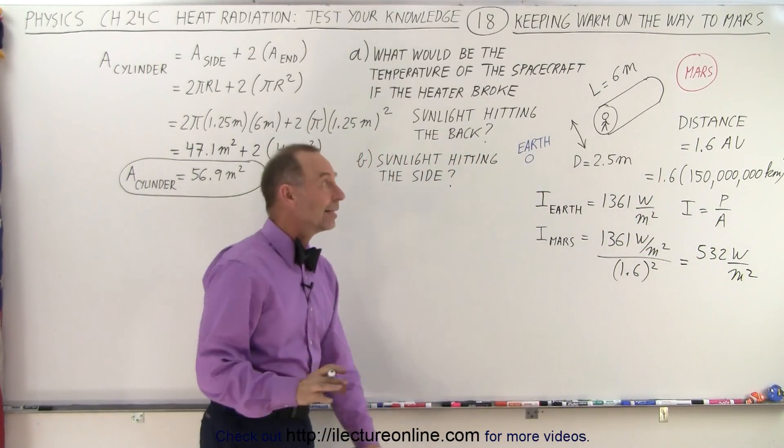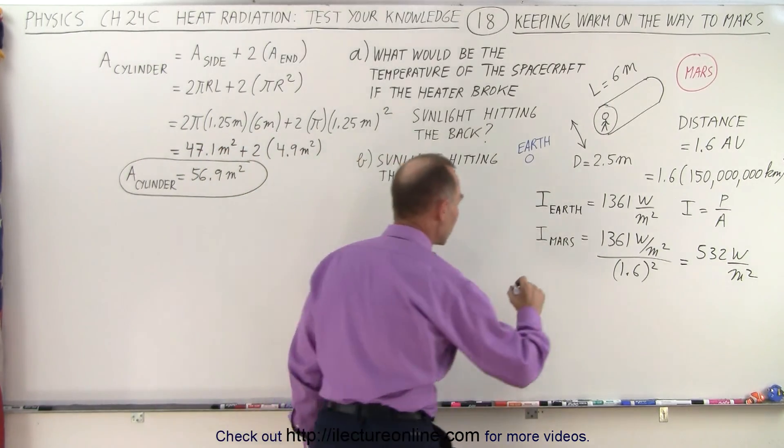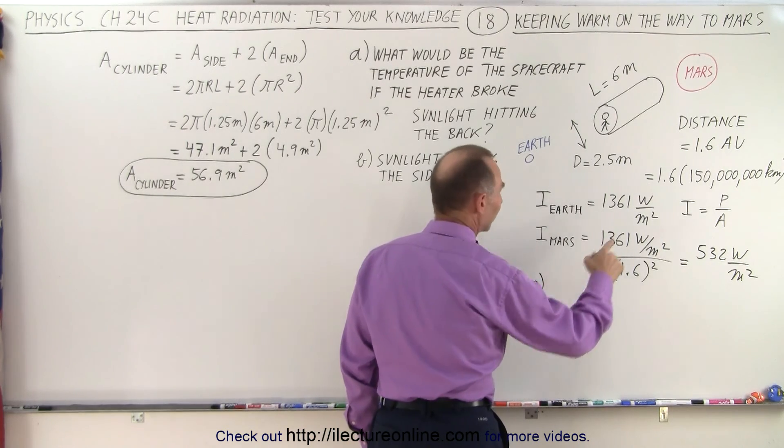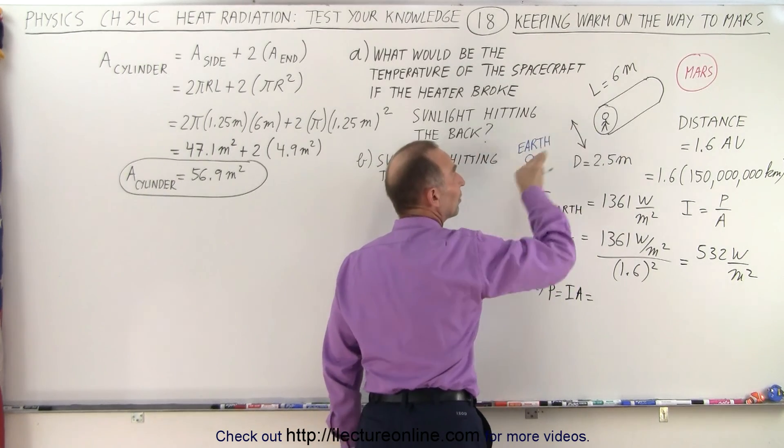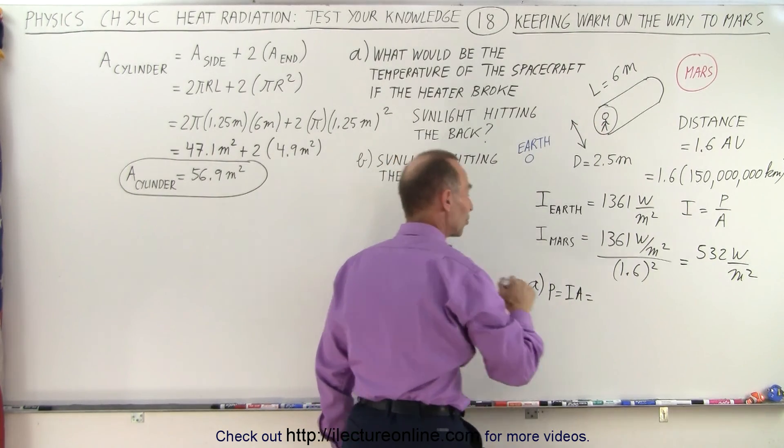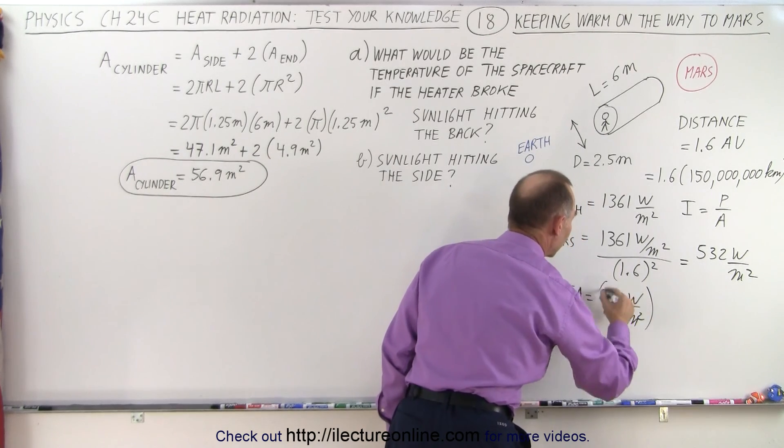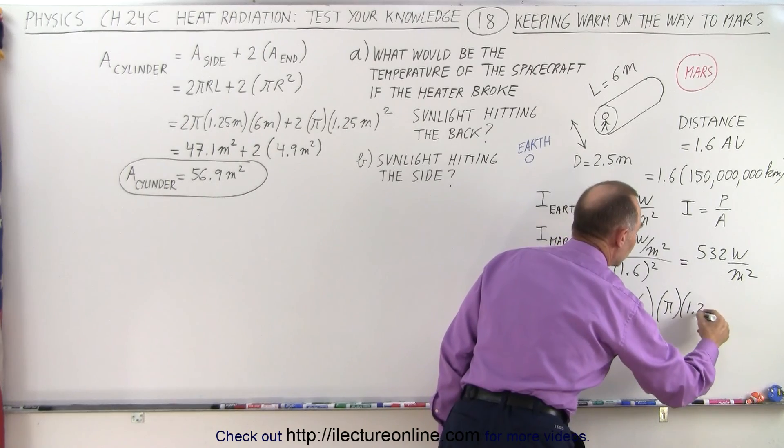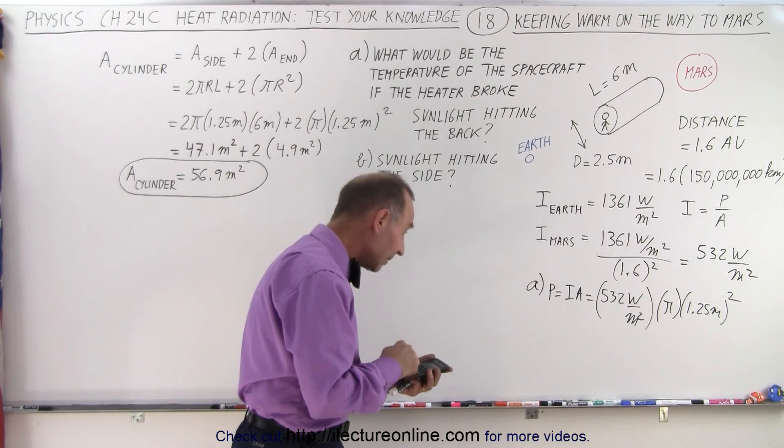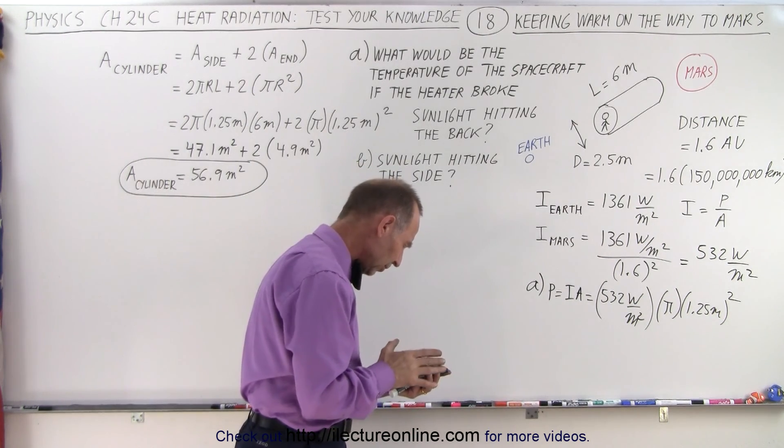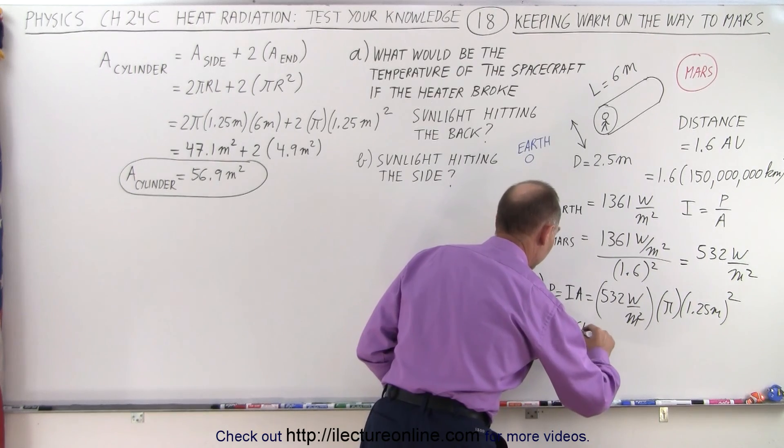So what we're going to do now is calculate how much heat the spacecraft would receive for Part A and how much heat the spacecraft would receive for Part B. So Part A, we can say that the power received is equal to the intensity times the area. So in this case, we only receive energy on the back side, that circle area of the spacecraft there, so that would be equal to 532 watts per square meter times the area, which would be pi times the radius, 1.25 meters squared. So multiply that times pi and times 1.25 squared equals that would be 2,610 watts. So the power for Part A would be 2,610 watts.